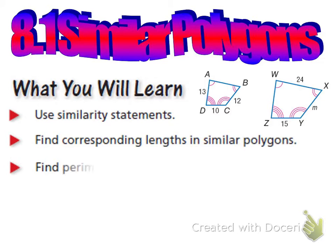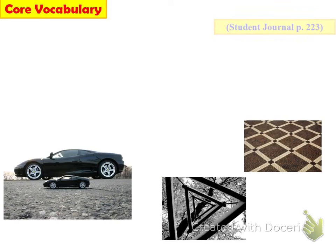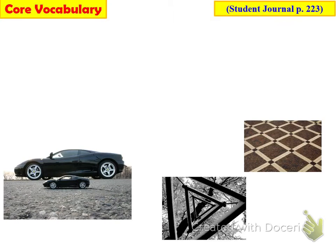Get out a pencil, a highlighter, and a calculator. We're going to talk about similarity statements, finding corresponding lengths in similar polygons. In your flipped classroom, you're going to learn about perimeters and areas of similar polygons, and then we're going to talk about whether polygons are similar in general. This is not necessarily the order we're going in, but let's first talk about this.